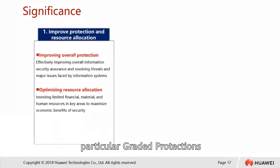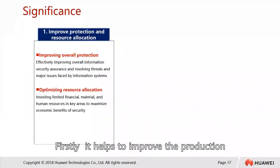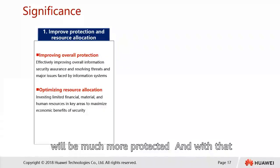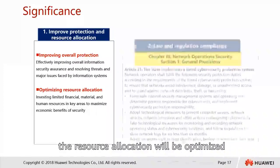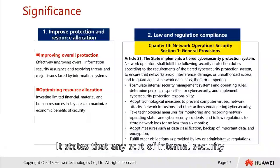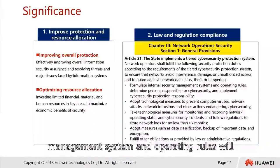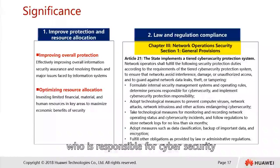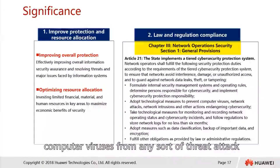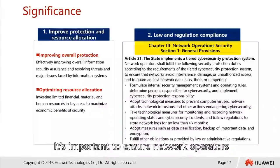What is the significance or importance of graded protections? Firstly, it helps to improve protection and resource allocation — helping to ensure information security is better protected and that resource allocation is optimized. Next is law and regulations compliance, where any sort of internal security management system and operating rules will determine a person responsible for cybersecurity. Adoption of technology to prevent computer viruses and any sort of threat attack is important to ensure network operators.